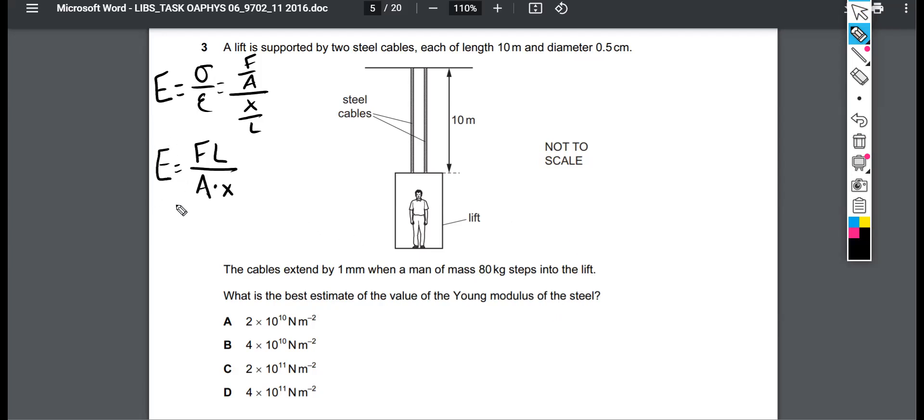So we should, since we're solving for young modulus E, we should be able to pick out what's the force, what's the length, what's the area, what's the extension. And this is tricky because there's lots of intermediate calculations along the way. Just like we looked at an example problem where there were four steel cylinders supporting a 10 kilonewton load, we had to divide that 10 kilonewtons amongst the four supporting rods. Here we have to realize that each cable is really only supporting half the man.